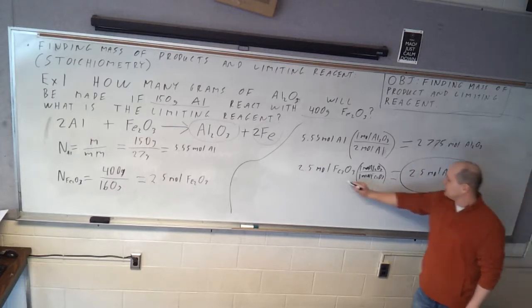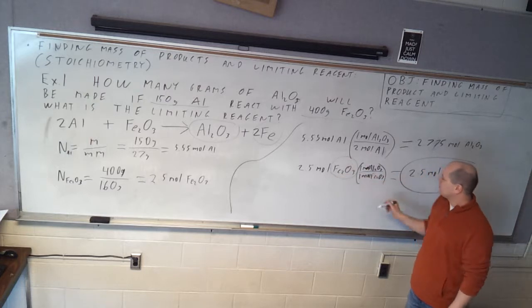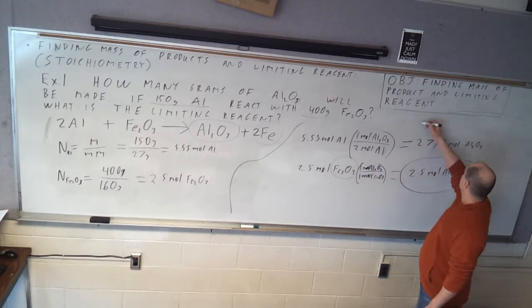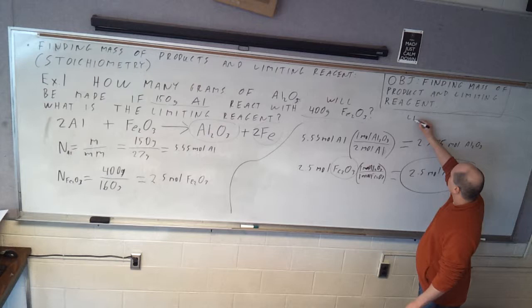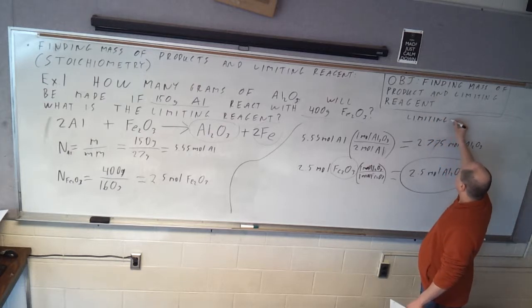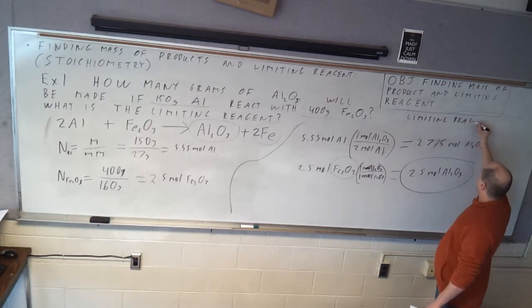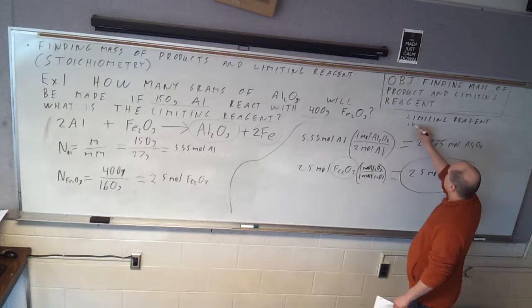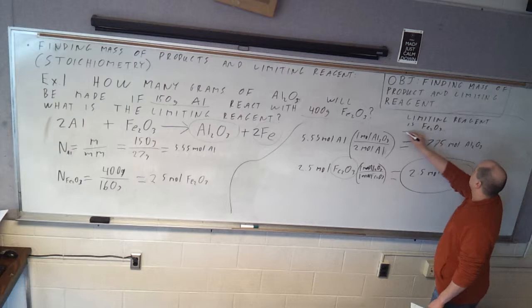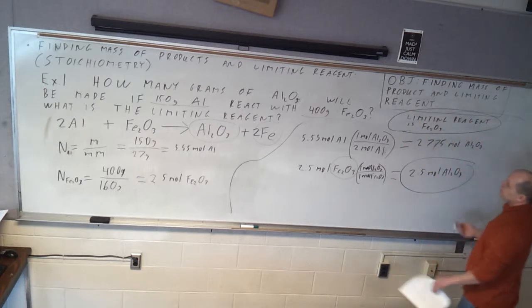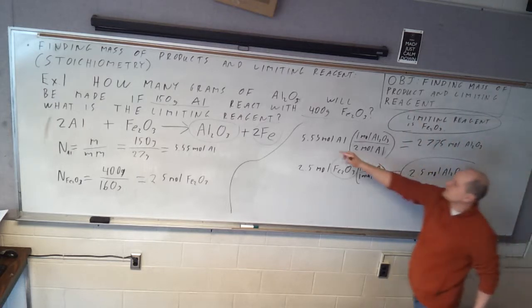Alright, so a couple of things we want to write down here. First of all, this is the one that makes less aluminum oxide, so that's our limiting reagent. So somewhere we need to write limiting reagent is Fe2O3. And then finally, the other thing, that's one of the questions: what's the limiting reagent?